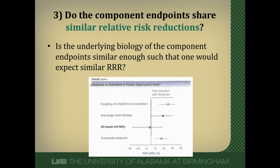For the third question, here's an example from a study comparing irbesartan, an ARB, to amlodipine, a calcium channel blocker, in patients with diabetic nephropathy. The composite was all-cause mortality, end-stage renal disease, or doubling of serum creatinine. If the intervention had a similar effect on each component, the hazard ratio boxes should line up — but all-cause mortality sticks out far to one side. This is a bad composite: the biology of end-stage renal disease and doubling of serum creatinine is fairly similar, but mortality has many different drivers. Additionally, no patient would mind their creatinine doubling compared to dying.